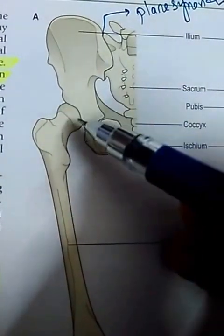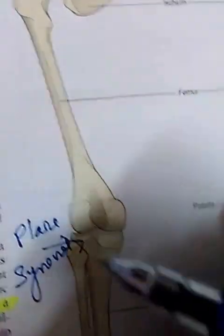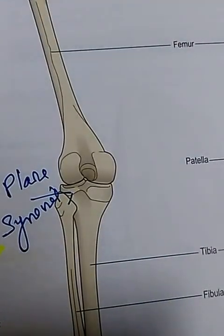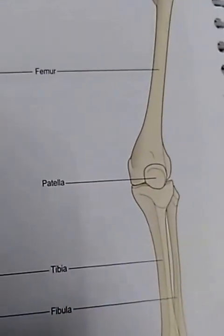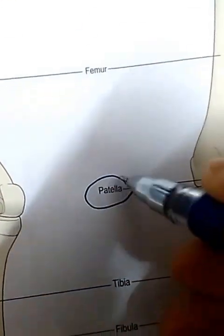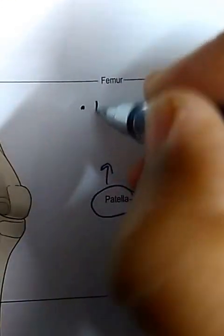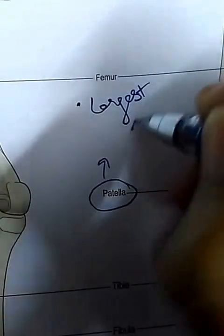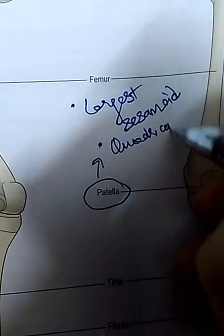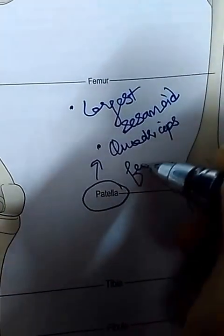This is the hip joint — we know it is a ball and socket type of joint. This is the femur. You can see the posterior surface and the anterior surface. The patella is the largest sesamoid bone, and it is formed in the tendon of quadriceps femoris.